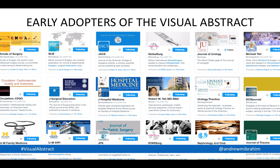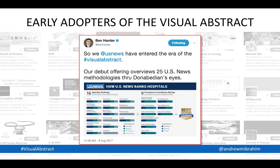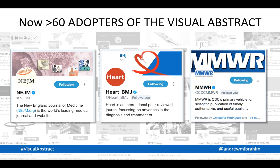Shortly after we started doing this, there were many adopters of the visual abstract. The journal Stroke went so far as to make it a requirement, and other journals have followed suit. U.S. News and World Report adopted it as part of their dissemination strategy in how they communicate their work for their annual hospital rankings. And many other journals — we're now over 60 — have adopted the visual abstract, including the New England Journal of Medicine, the BMJ, and most recently the CDC.